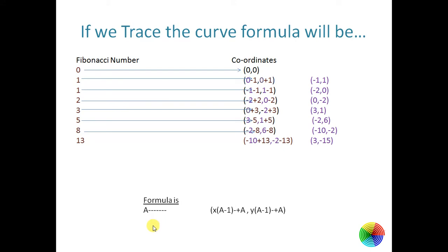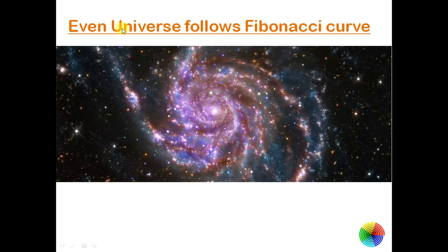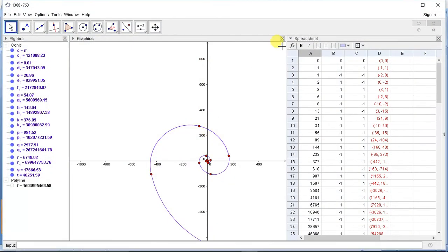If we plot these points in GeoGebra, we get a Fibonacci curve. If you want to find practical uses of Fibonacci numbers, you can look at the universe — spiral galaxies also follow the Fibonacci curve. In many real-time applications such curves are used. Let's now see this Fibonacci curve in GeoGebra.